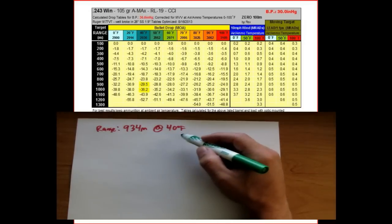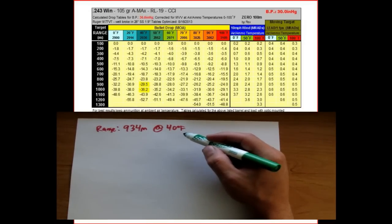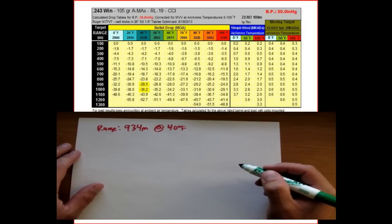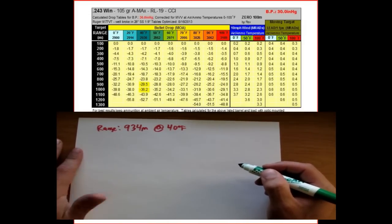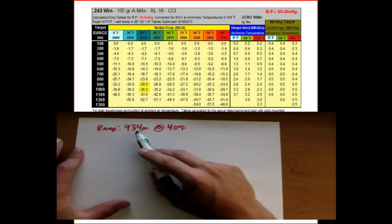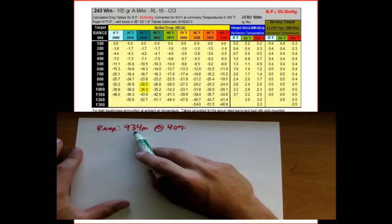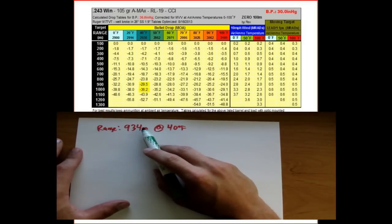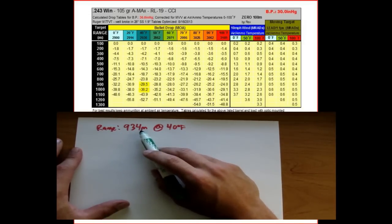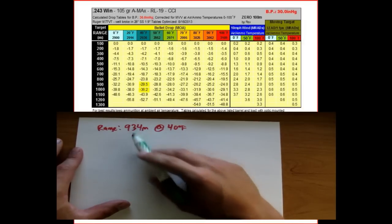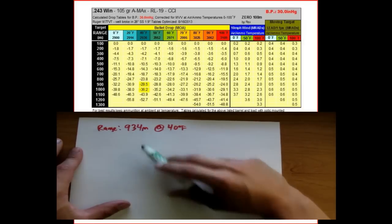You can interpolate on the fly and get pretty close, but if you want a more exact value, you'll want to do it mathematically. What we're going to do is find the data for the closest number below 934 and the closest number above it, then use that drop data to figure out what it should be in between.